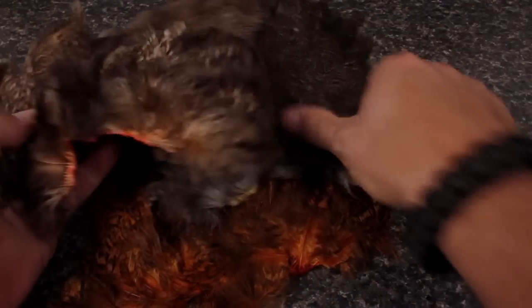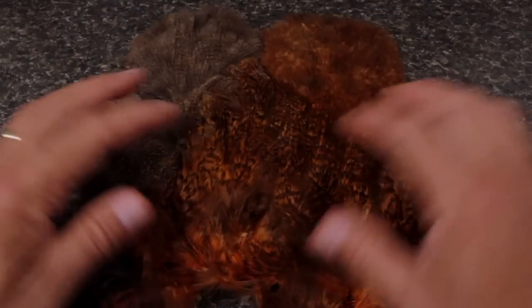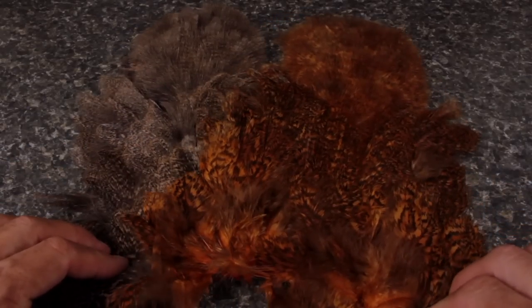On this fly, I'm going to use feathers from two different Coq de Leon pelts. The brownish looking one is actually a color called speckled salmon, while the other is speckled burnt orange.